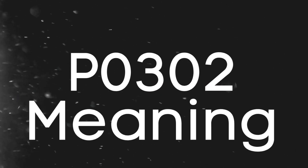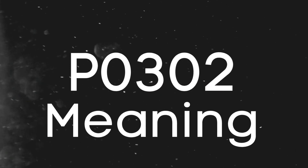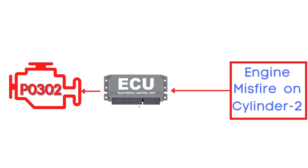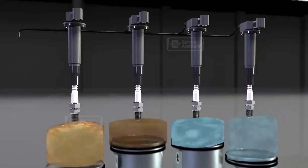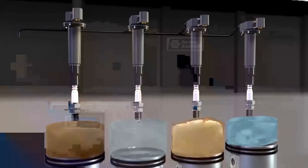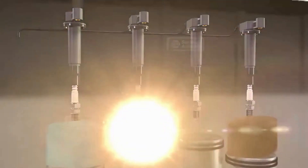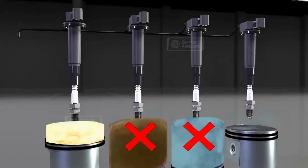First things first, let's break down what the P0302 code actually is. This code gets triggered when the Engine Control Module, or ECM, detects an engine misfire on Cylinder 2. A misfire means that the combustion process inside one or more cylinders isn't happening properly.